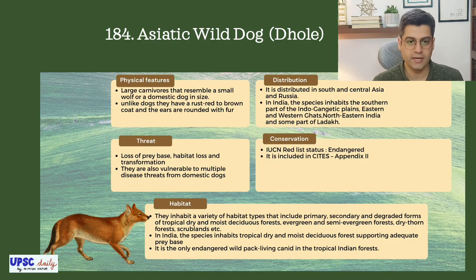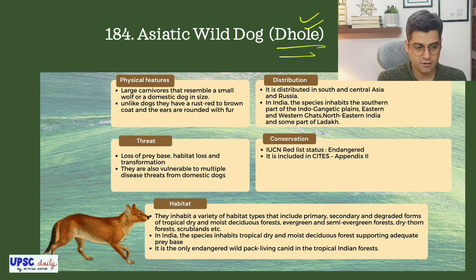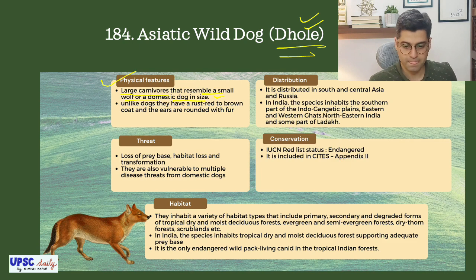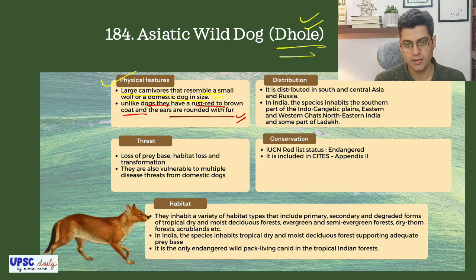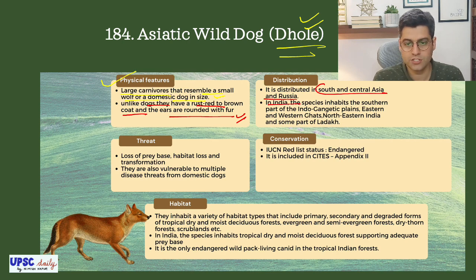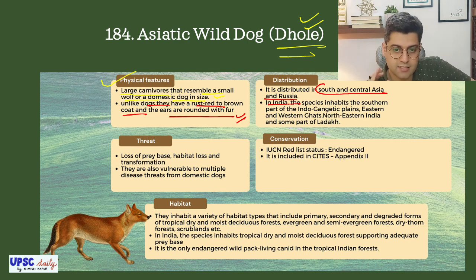The next topic is the Asiatic Wild Dog, also known as Dhole. Physical features: it is a large carnivore that resembles a small wolf or domestic dog in size. Unlike dogs, they have a rust red to brown coat and rounded ears with fur. It is distributed in South and Central Asia, Russia and India. In India, the species inhabits the southern Indo-Gangetic plains, eastern and western Ghats, northeastern India and some parts of Ladakh.